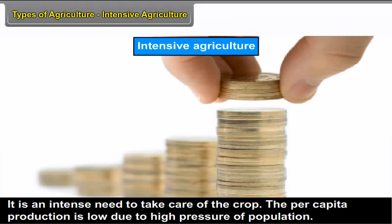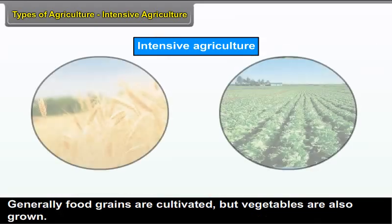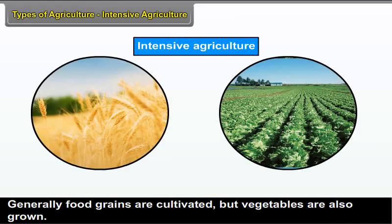The per capita production is low due to high pressure of population. Generally, food grains are cultivated but vegetables are also grown. Intensive agriculture is practiced in all districts of Maharashtra.